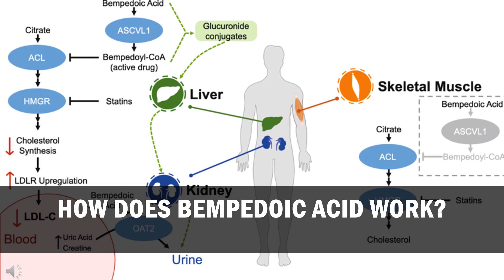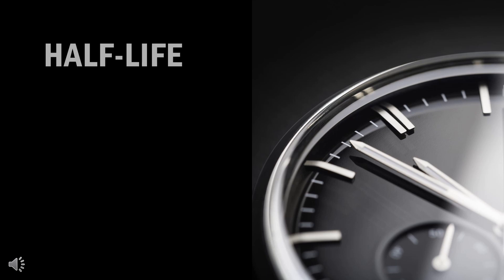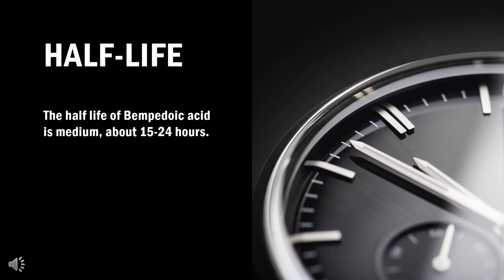Lastly, ETC-1002 activates AMP-activated protein kinase (AMPK), which inhibits the synthesis of cholesterol via the inhibition of HMG-CoA reductase. The relevance of this to humans is unknown. The half-life of Bempedoic Acid ranges between 15 and 24 hours. Prescribing information indicates a clearance of 21 hours, plus or minus 11 hours.